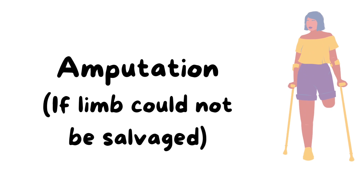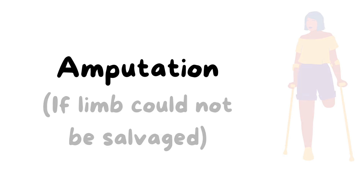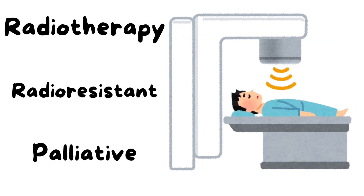If the limb cannot be salvaged — meaning negative margins cannot be achieved — then amputation at an appropriate level has to be done. Osteosarcoma is a radio-resistant tumor and is not very sensitive to radiotherapy; hence, radiotherapy can be used as palliative therapy when the tumors are unresectable.